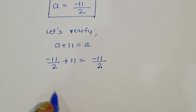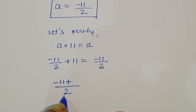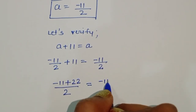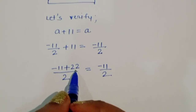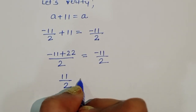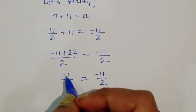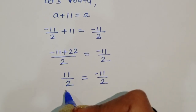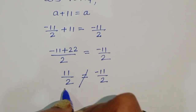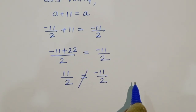Taking LCM, 2 cancels: -11 + 22 = 11, so we get √(11/2) = √(-11/2). But 11/2 is positive and -11/2 is negative, so LHS is not equal to RHS. So we need to do something else here.